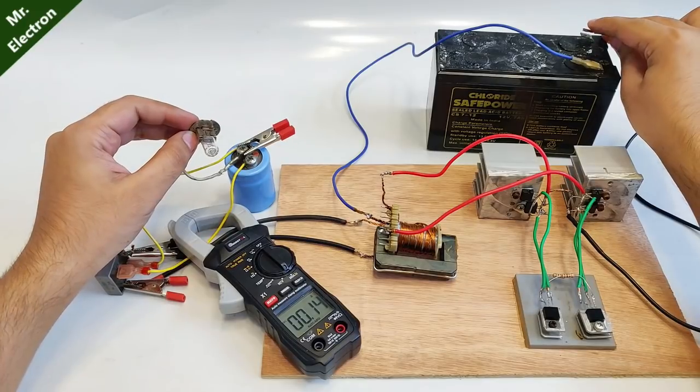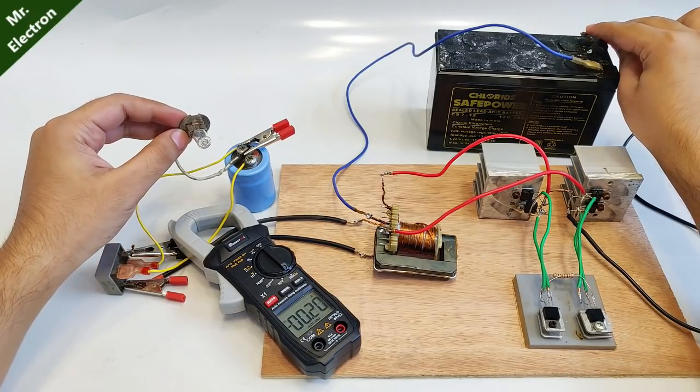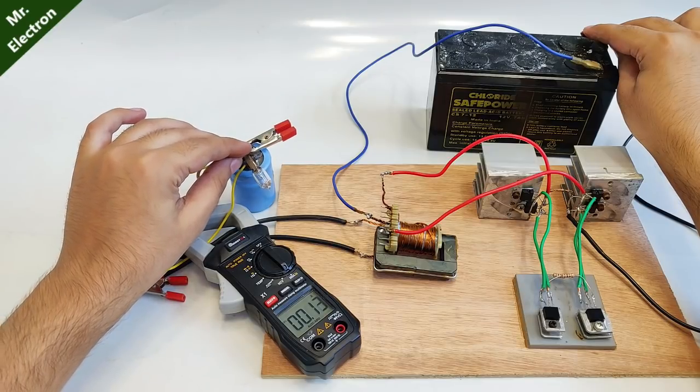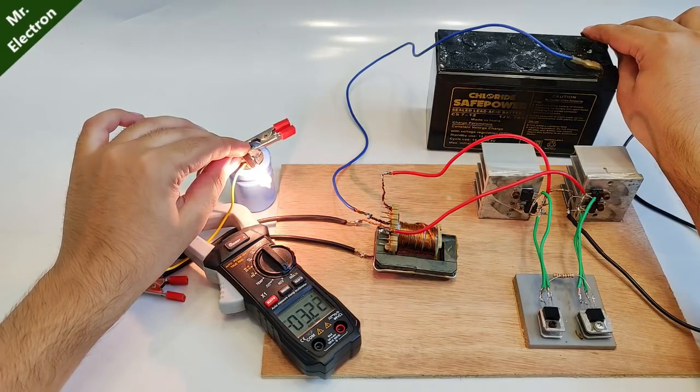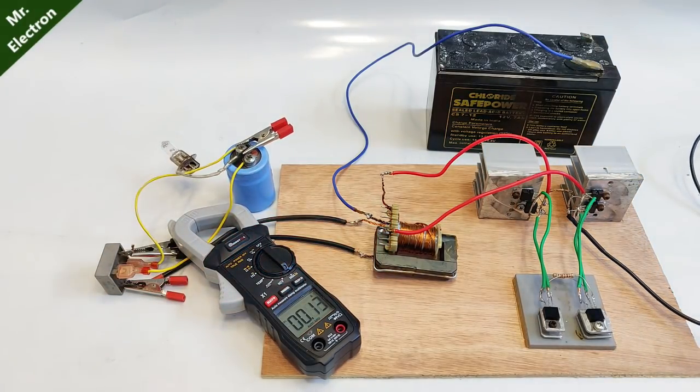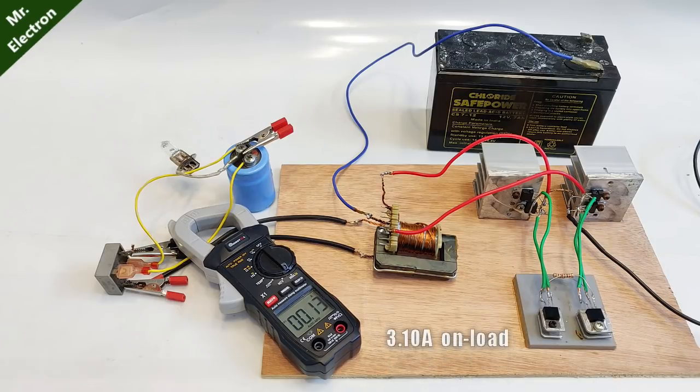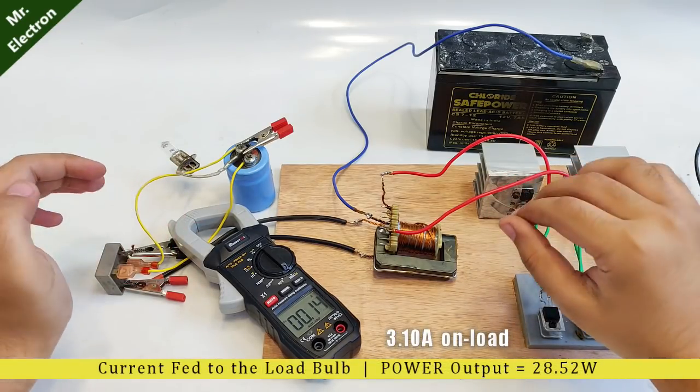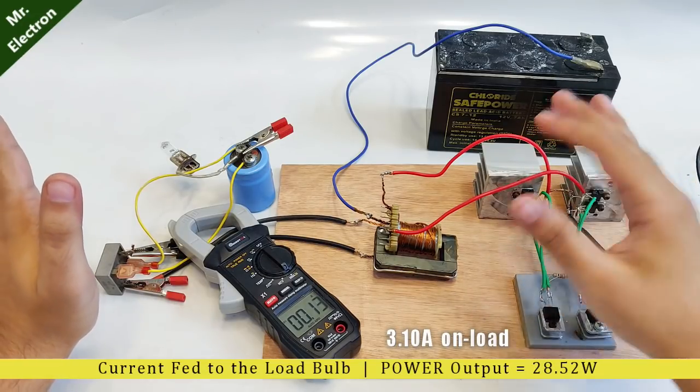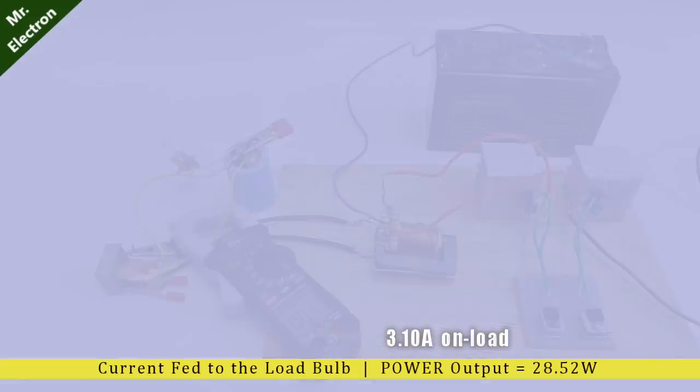The output current is 3.10 and the input current was around 3.17 or like 20 as far as I remember.